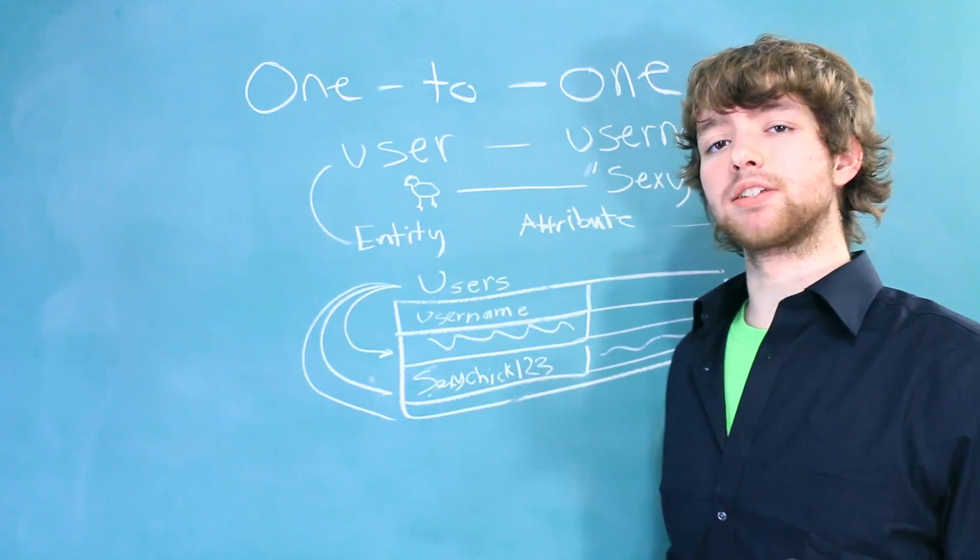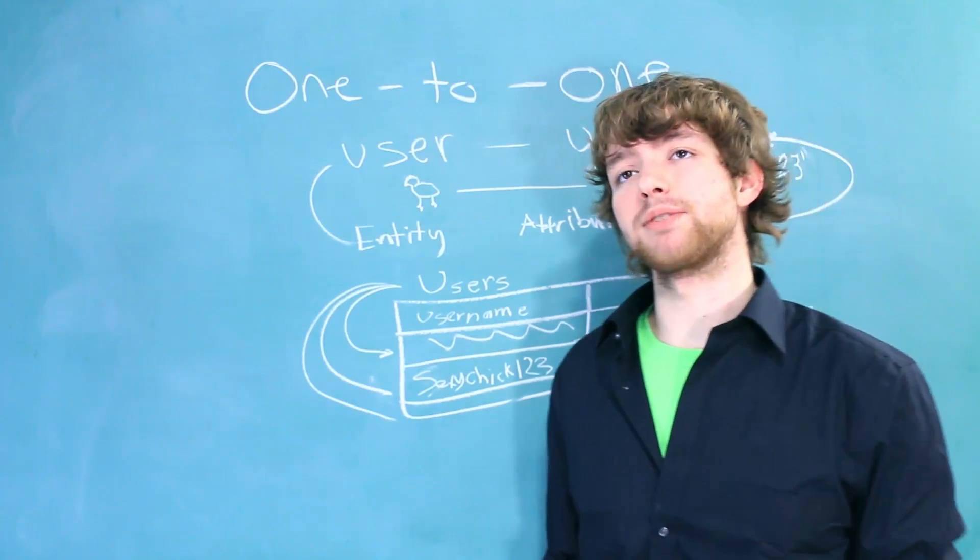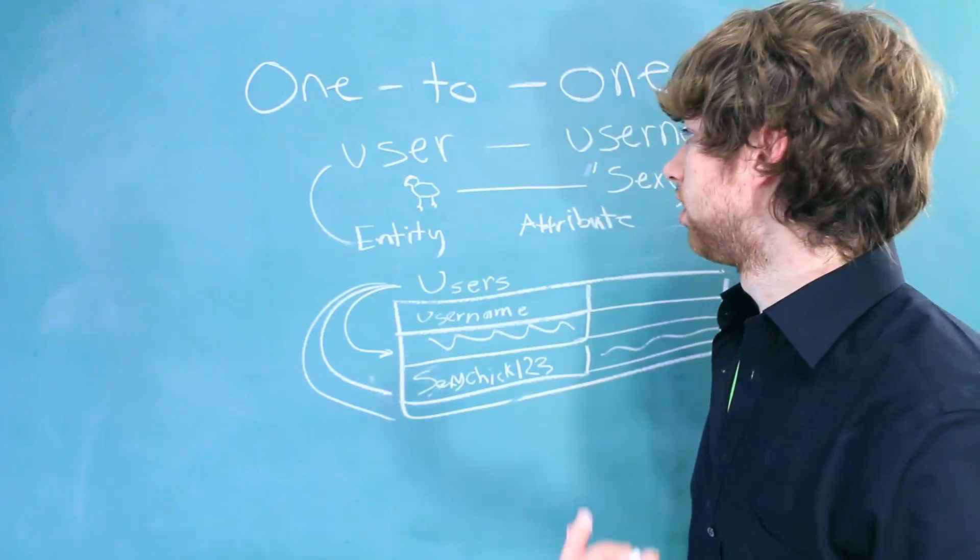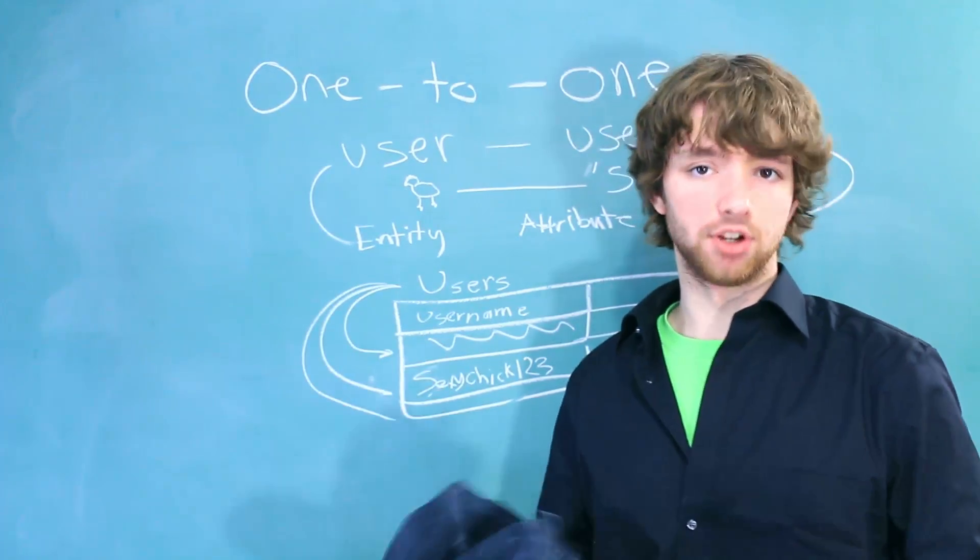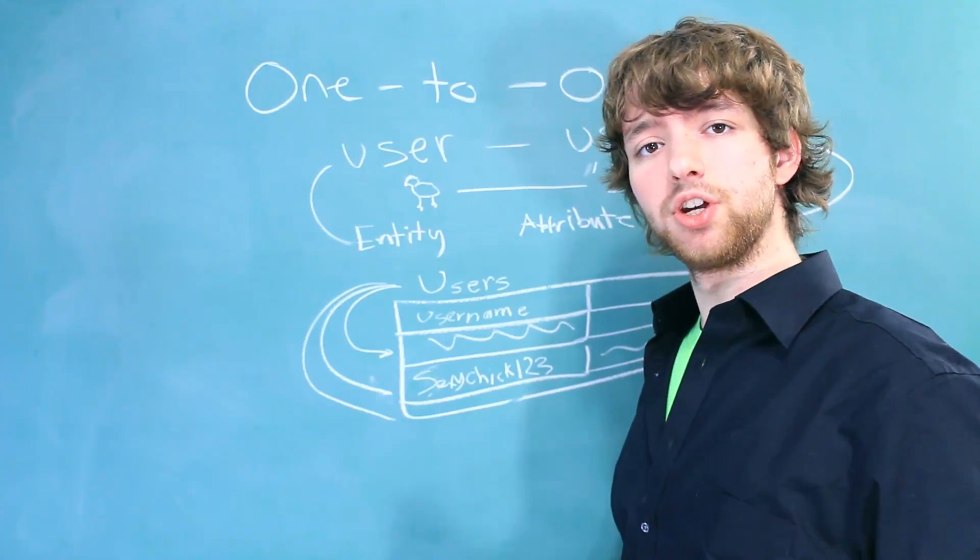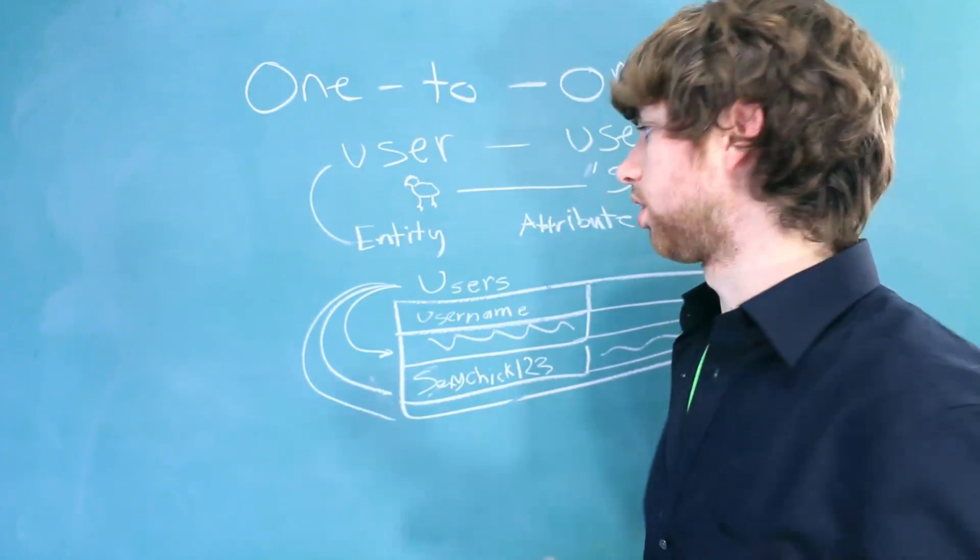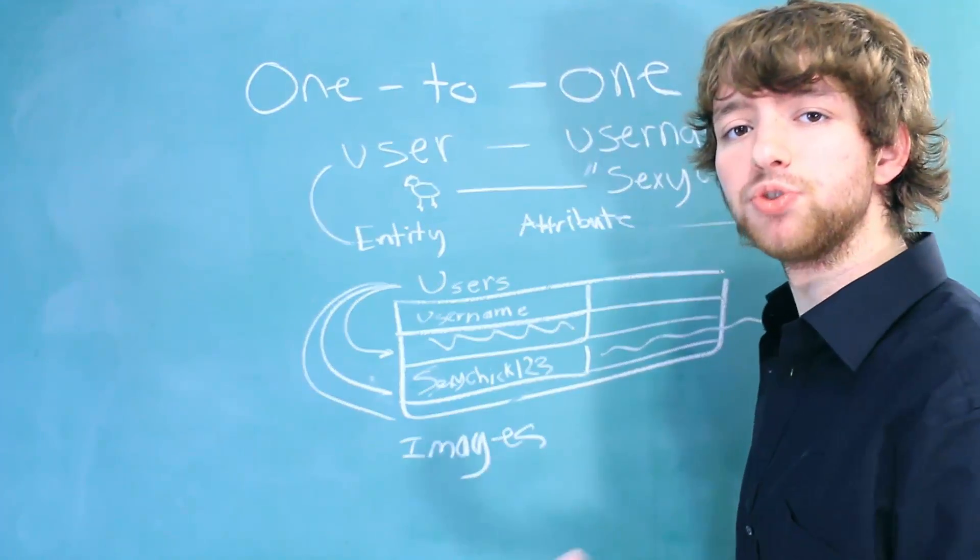Now, there is one other way you can store a one-to-one relationship if you want, and that's to break something off into a new table. So, an example for this might be an image. Let's say a user can have one image, and that image is used for their profile. This image could be placed into a new table called images.